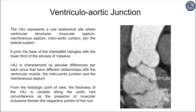The ventricular-aortic junction represents a real anatomical site where ventricular structures — the muscular septum, membranous septum, and mitral-aortic curtain — join the arterial system. It is positioned within the wall of the aorta. Schematically, it is represented by an almost circular line constructed by joining the base of the interleaflet triangles with the lower third of the sinuses of Valsalva, slightly above the nadir of the aortic leaflet, crossing several points along the semilunar line of the aortic leaflet.